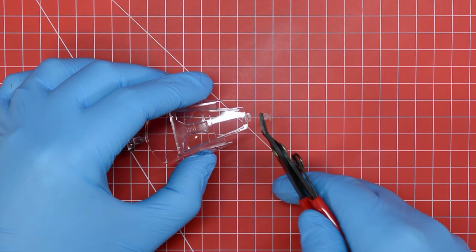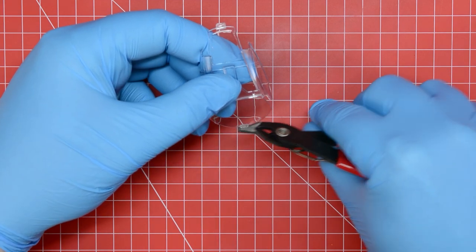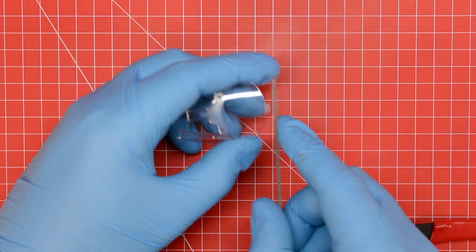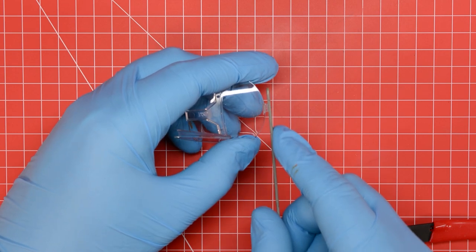Any excess plastic was trimmed away first with the cutters and then we used the modelling file to clean up the locating tabs to make sure nothing interfered with the fit.